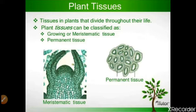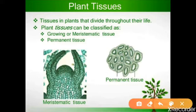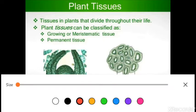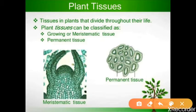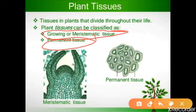What is plant tissue? The tissue that is present in the plant is known as plant tissue. Plant tissue is mainly categorized into two types according to their ability to divide: meristematic tissue and permanent tissue. If they have the ability to divide throughout their life, it is called meristematic tissue. Permanent tissue will stop dividing after an aging period.